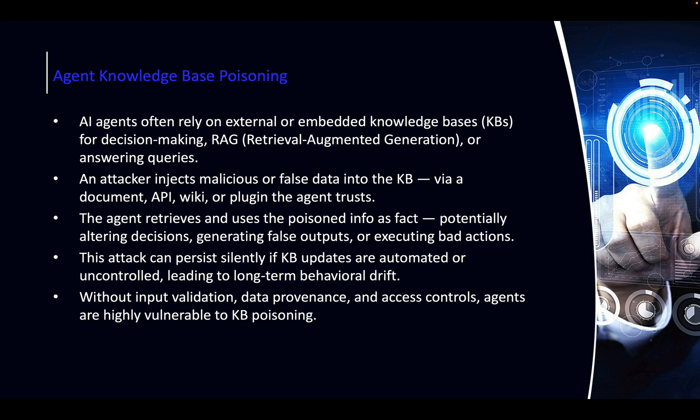Agent Knowledge Base Poisoning: this is similar to normal model poisoning. Agents usually retrieve their information through a RAG pipeline or API calls, going to repositories and wikis to get their information. If an attacker is able to find out where this information is being drawn from and manipulate it, you basically poison the base information the agent uses to make decisions. This has a bigger blast radius than normal LLM poisoning, because agents may call tools or retrieve information they're not supposed to.